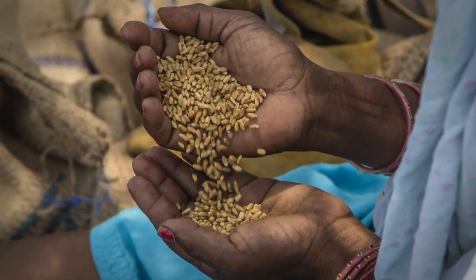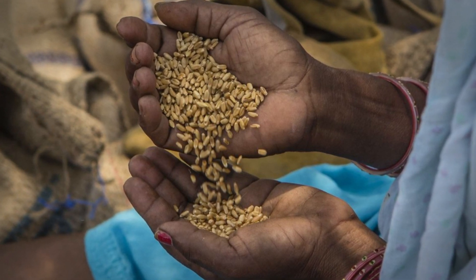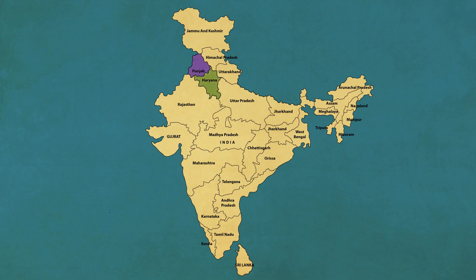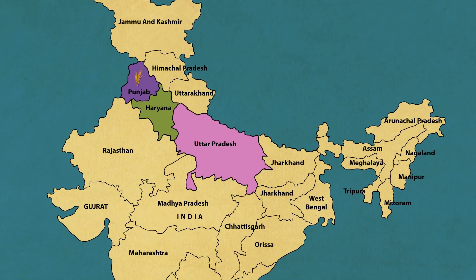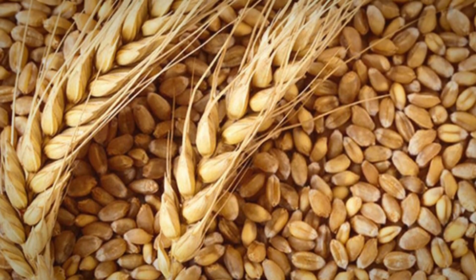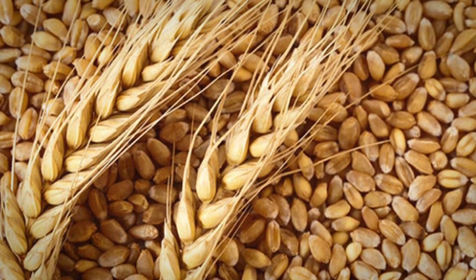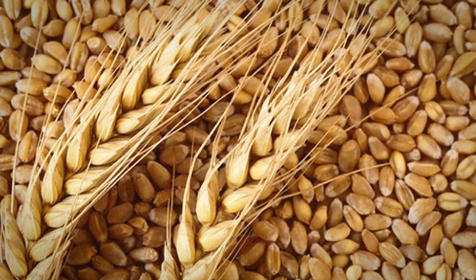At the center of the Green Revolution was a rapid increase in the production of wheat across the states of Punjab, Haryana, and Uttar Pradesh — in what is today called the wheat belt of India. This was achieved through the use of special High Yielding Variety, or HYV, seeds. When Shastri became Prime Minister in June 1964, India was sitting on a ticking time bomb.